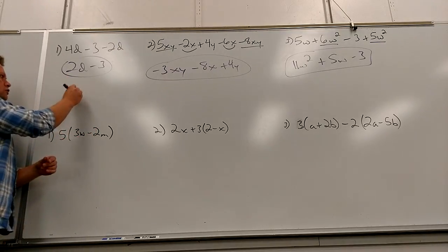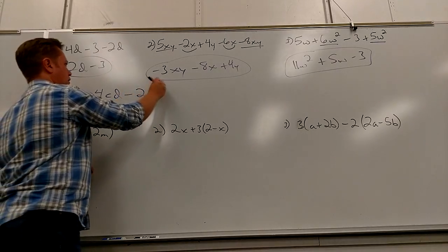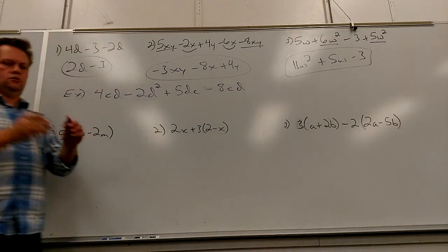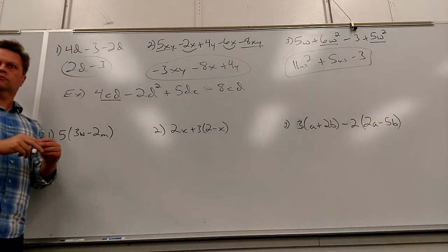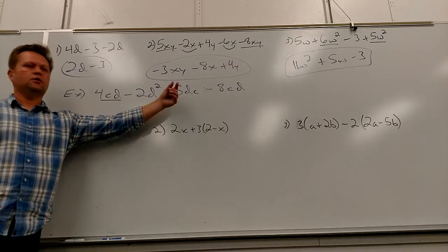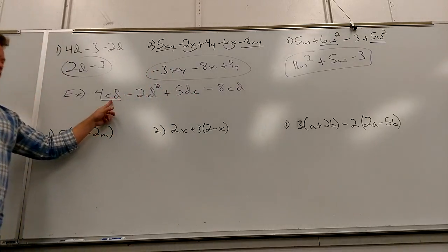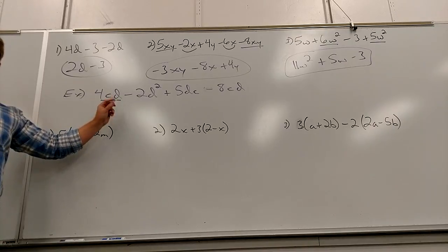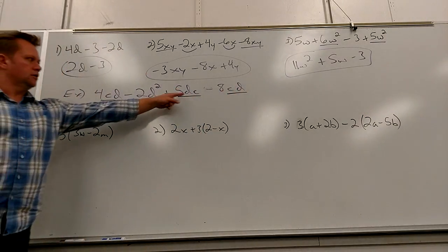A real quick example that really trips people up before we do these. If I had 4CD minus 2D squared plus 5DC minus 8CD. Who's like terms with this guy? The X. And the five. And? This guy. Right. D times C is the same thing as C times D. Somebody just wrote it out of order. So how many C's does this guy have? One. How many D's? One. So any like terms has to have one C and one D.